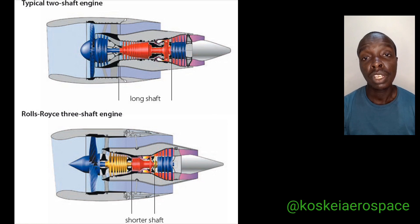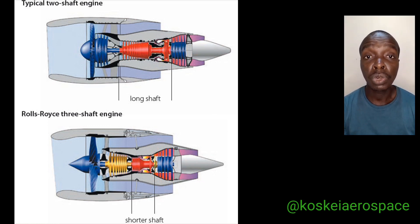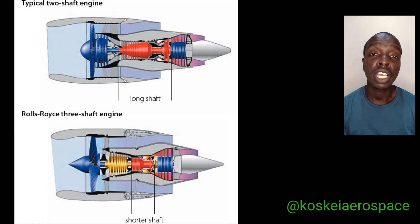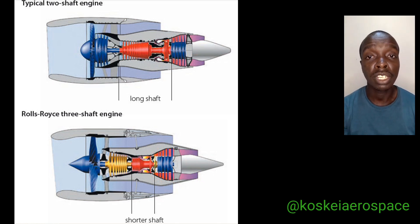For the turbofan engine, the most common types are twin spool and triple spool. A spool is a shaft which connects a compressor section and a turbine section. For the twin spool, we have high pressure and low pressure. The high pressure section is made up of the high pressure compressor and high pressure turbine connected by a shaft, and we have the low pressure compressor connected to the low pressure turbine.